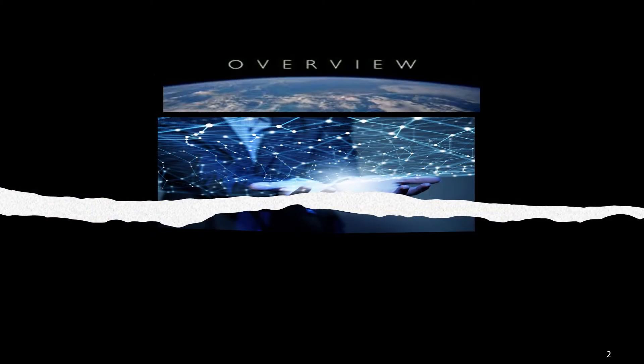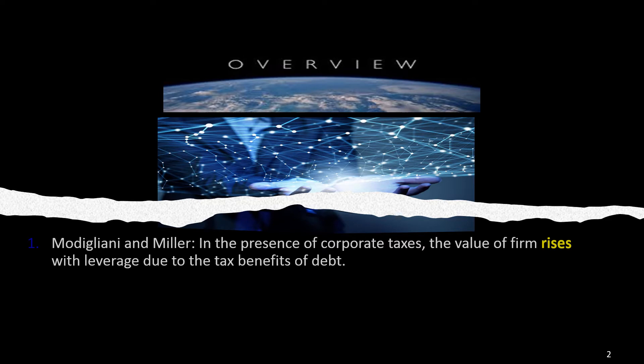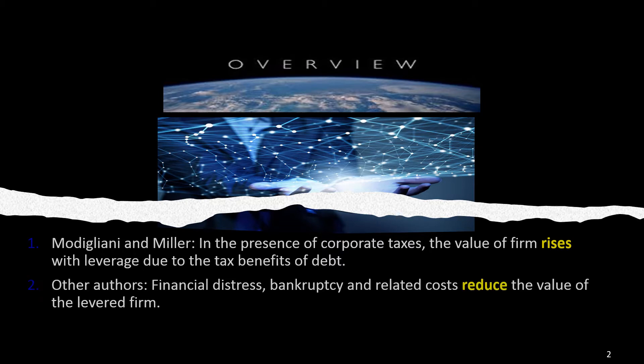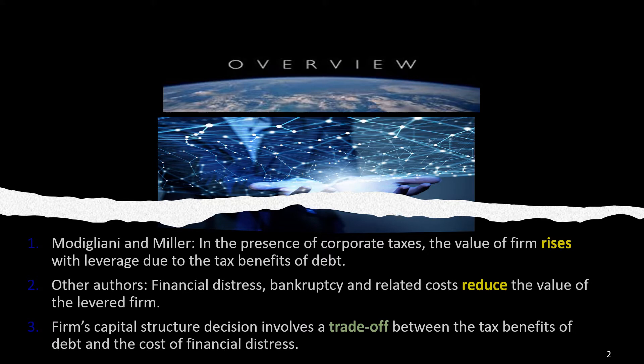According to Modigliani and Miller, in the presence of corporate taxes, the value of the firm rises with leverage due to the tax benefits of debt. However, other authors have suggested that financial distress, bankruptcy, and related costs reduce the value of the levered firm. Therefore, a firm's capital structure decision involves a trade-off between the tax benefits of debt and the cost of financial distress.